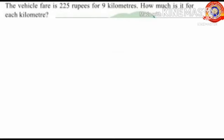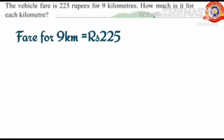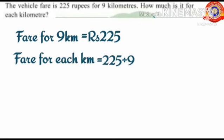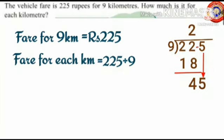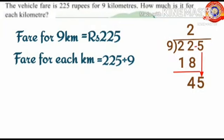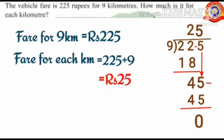Next question: the vehicle fare is 225 rupees for nine kilometers. How much is it for each kilometer? To find the vehicle fare for each kilometer, divide 225 by 9. Take 22: 9 goes 2 times (2 × 9 = 18), 22 minus 18 is 4. Bring down 5 to get 45. Nine goes 5 times (5 × 9 = 45), 45 minus 45 is 0. The answer is 25 — so the vehicle fare for each kilometer is 25 rupees.